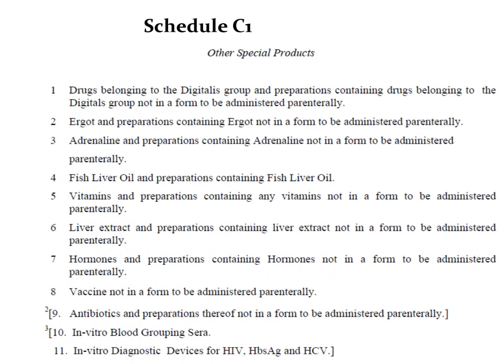Schedule C1 is also a list of biological products. As you can see, the list is very exhaustive and tells you in detail about the products that fall under Schedule C1. It includes drugs belonging to the digitalis group, ergot alkaloids, adrenaline and their preparations, fish liver oil, hormones, liver extract, diagnostic tests, etc. Go through the schedule to understand more about the special products that fall under Schedule C1.